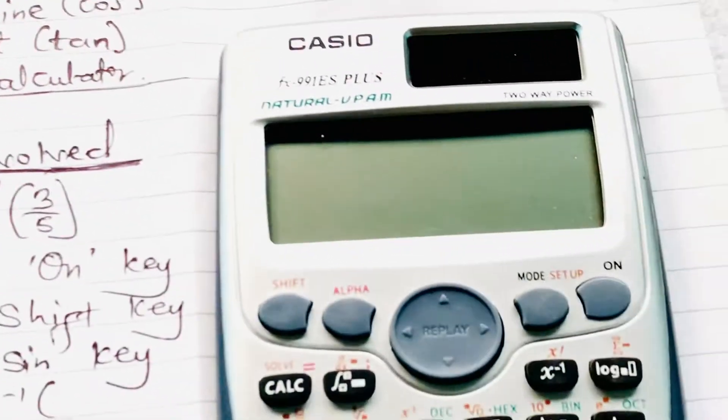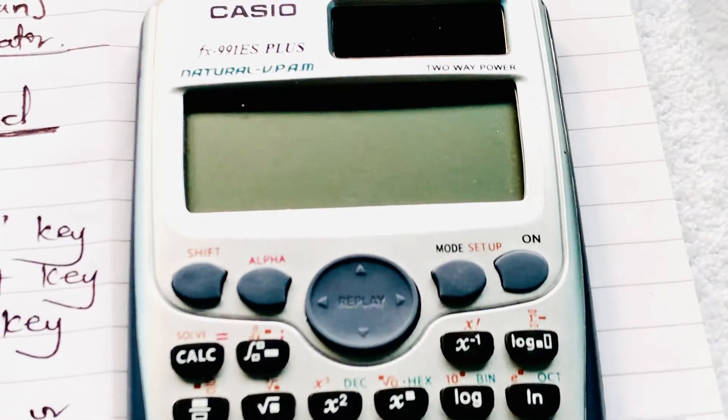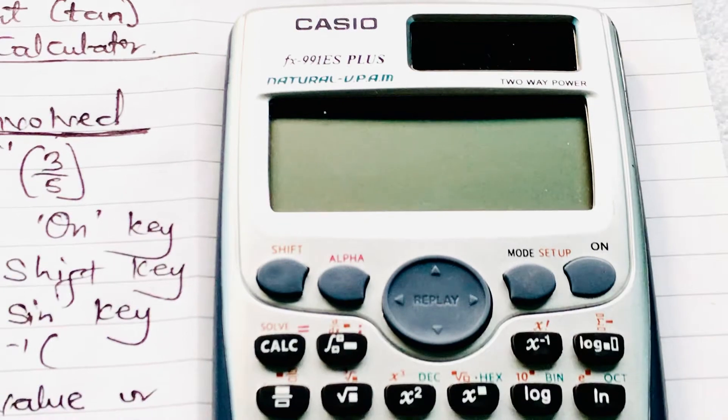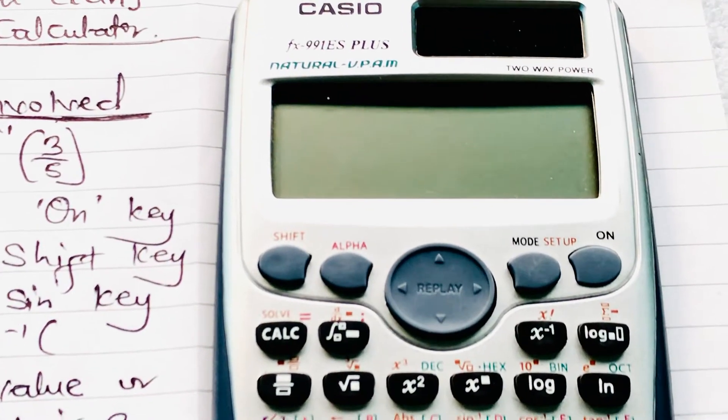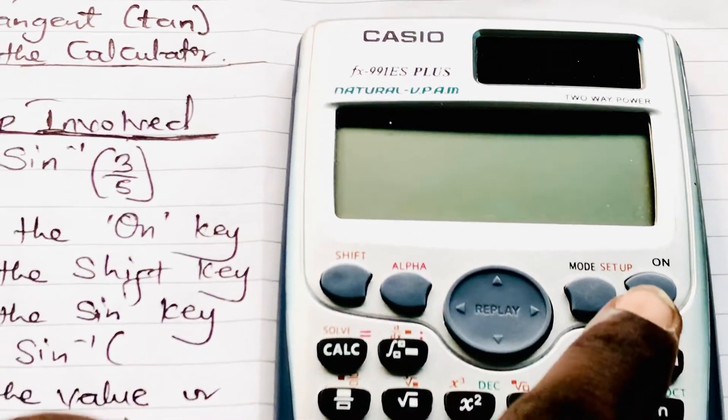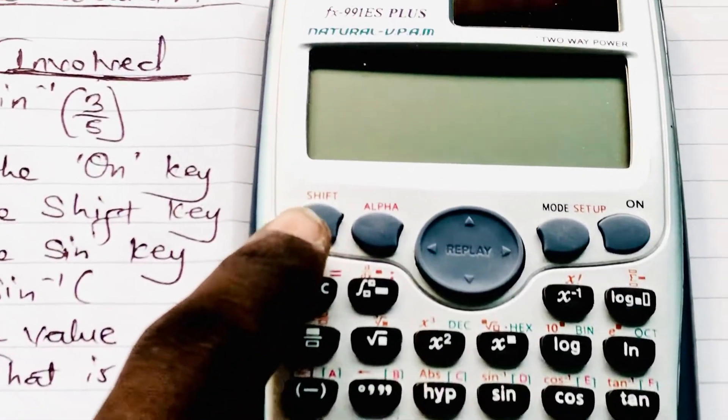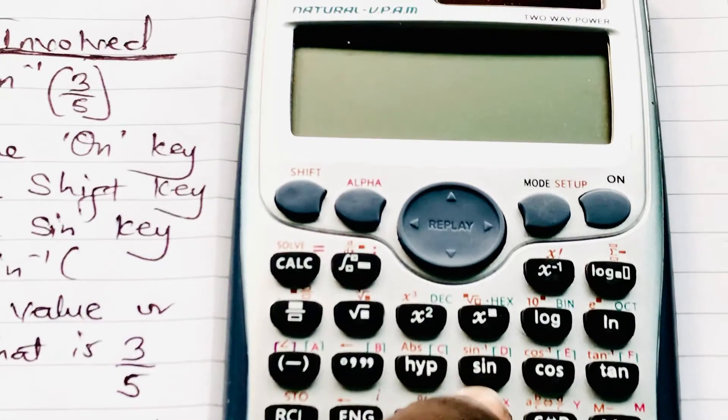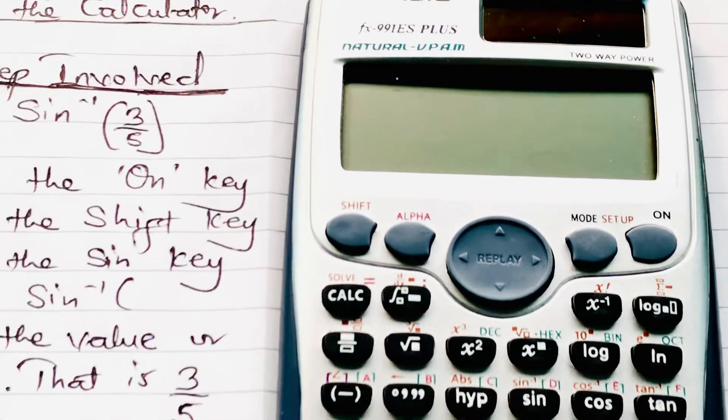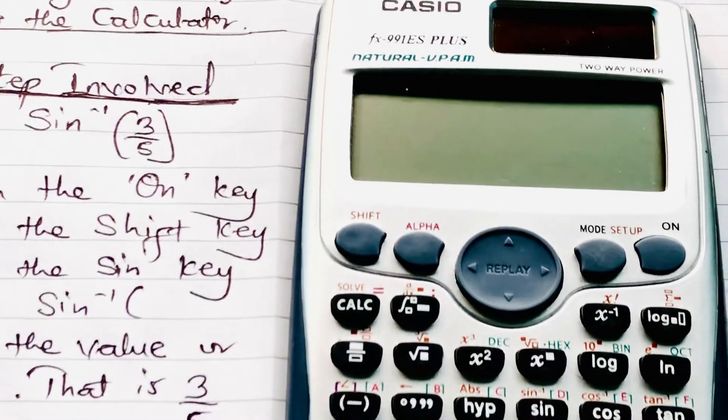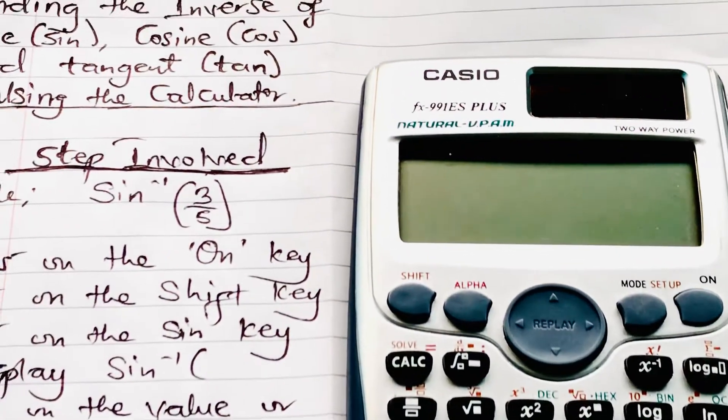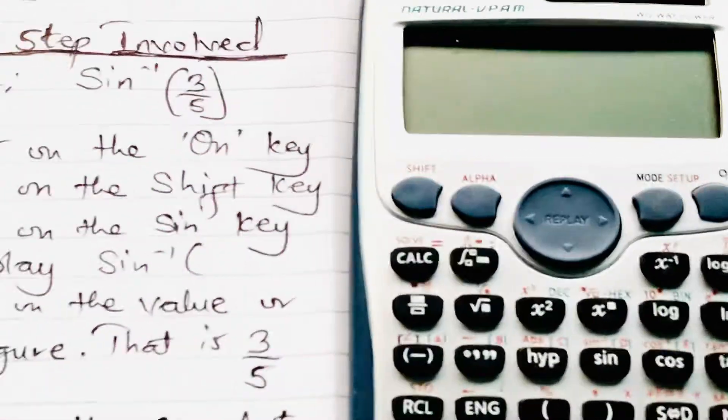So we come back to our calculator and look at some special features. On our calculator, we have the ON key, the SHIFT key, the SINE, COSINE, and TANGENT keys, plus other keys. But our concentration for today is going to be on these few keys.